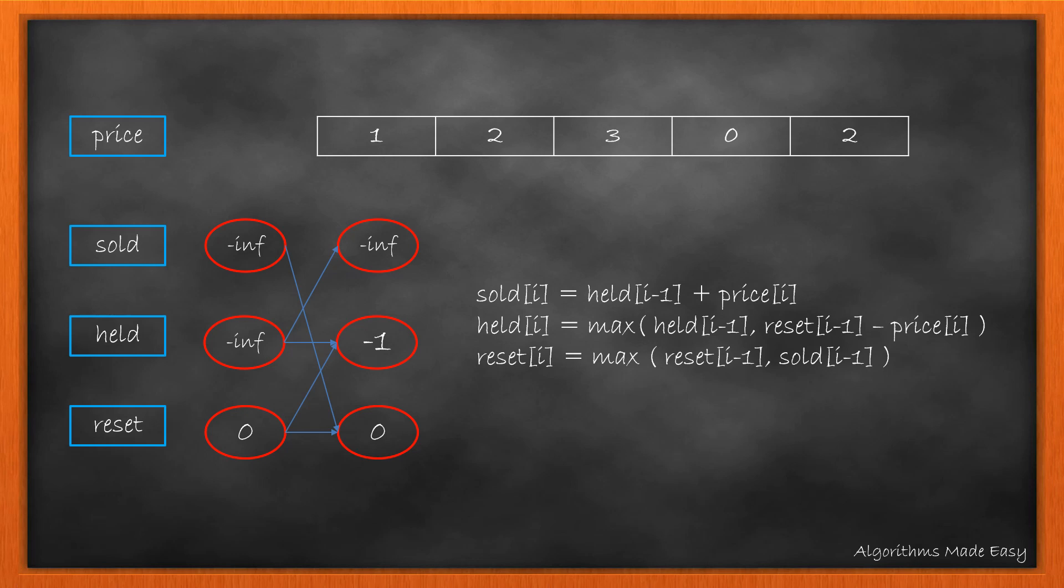Computing the next state by using the equations, the arrow depicts the movement from one state to another and follows what we have discussed earlier. We move from sold to reset state, from held to either the sold state or resting in the same state. And similarly in reset we move to held or stay in the same state.